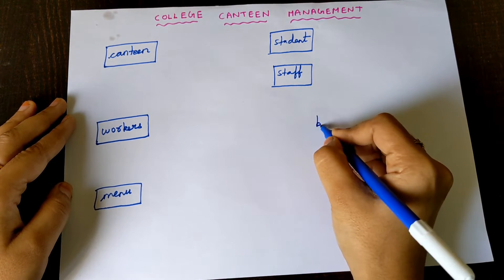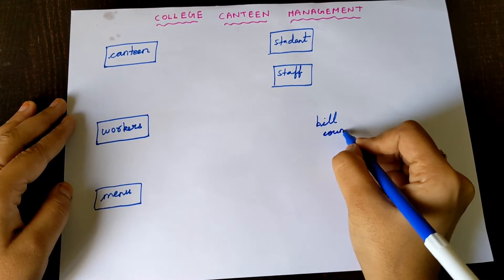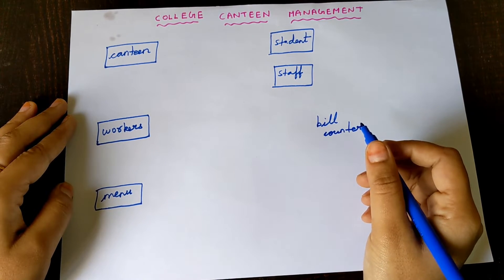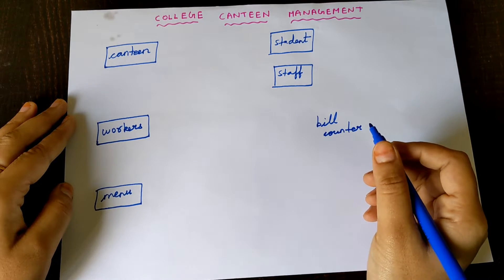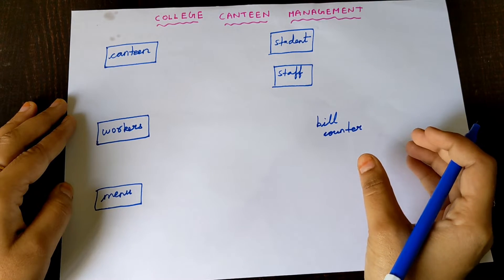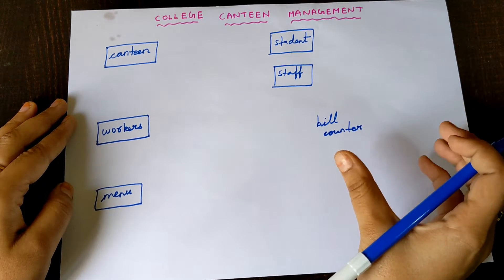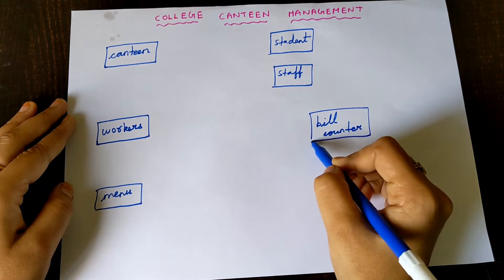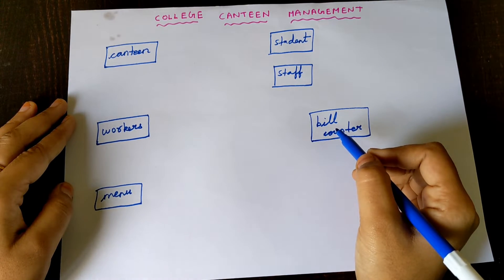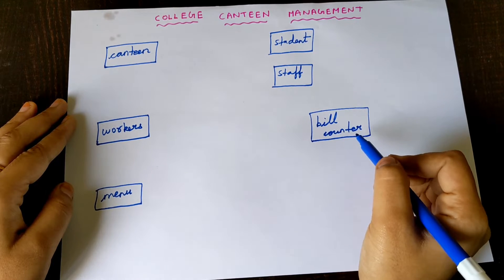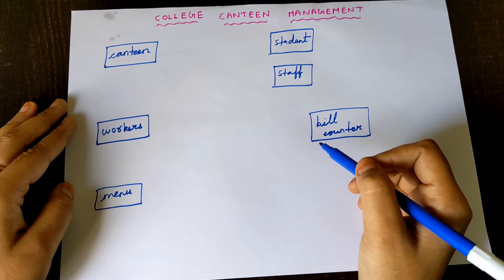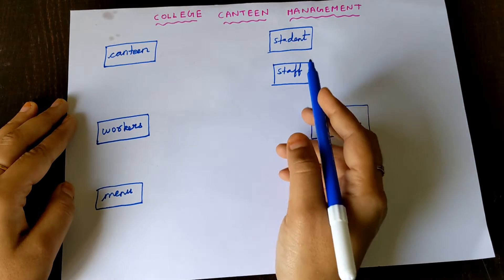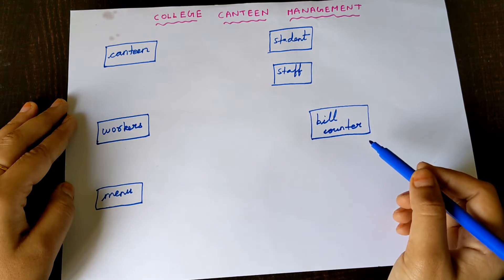Next, Bill Counter. The canteen is one big building, and a small portion of that building is the bill counter. Since it is physically existing and it is an object, it is an entity, written inside a rectangular box. So our entities are: Canteen, Students, Staff, Workers, Menu, and Bill Counter.